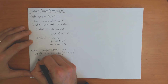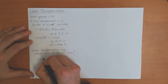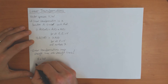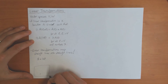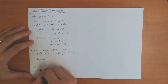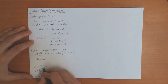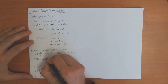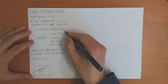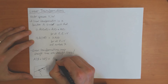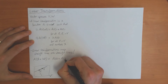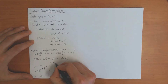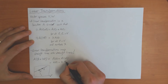We can prove this using the definition of a straight line from last week. A straight line has the equation x = A + lambda*V, where A is a position vector and V is a vector along the line. By varying lambda you can get any point on the line. If I apply transformation A to this, the first property gives A(A + lambda*V) = A(A) + A(lambda*V), and then the second property gives A(A) + lambda*A(V).